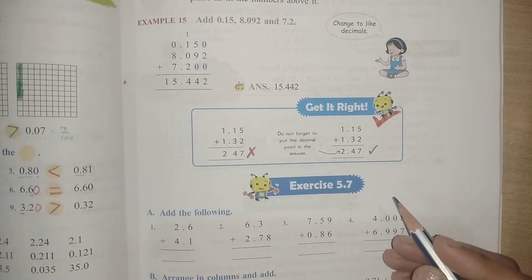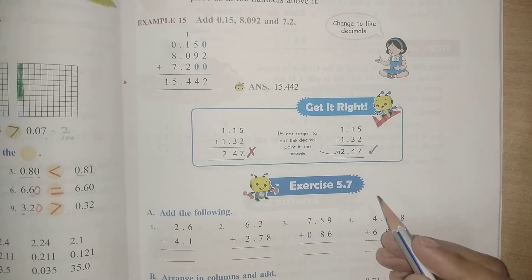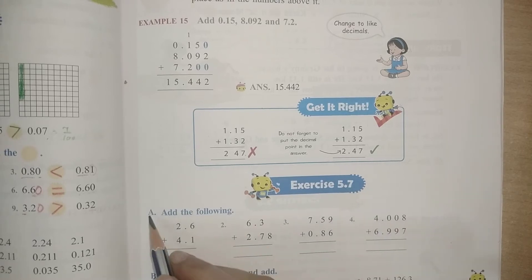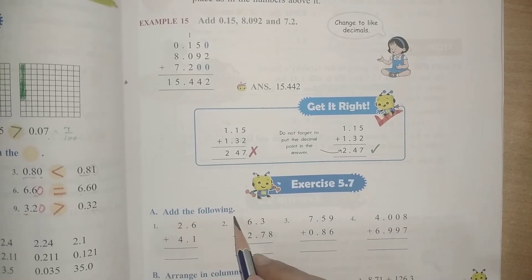Hello kids and welcome back to your math class. In this video I'm going to explain addition of decimals. Here is exercise 5.7 part A: add the following. Whenever we have to add decimal numbers, first of all we have to change the decimal numbers to like decimals if required, otherwise simply add the numbers.